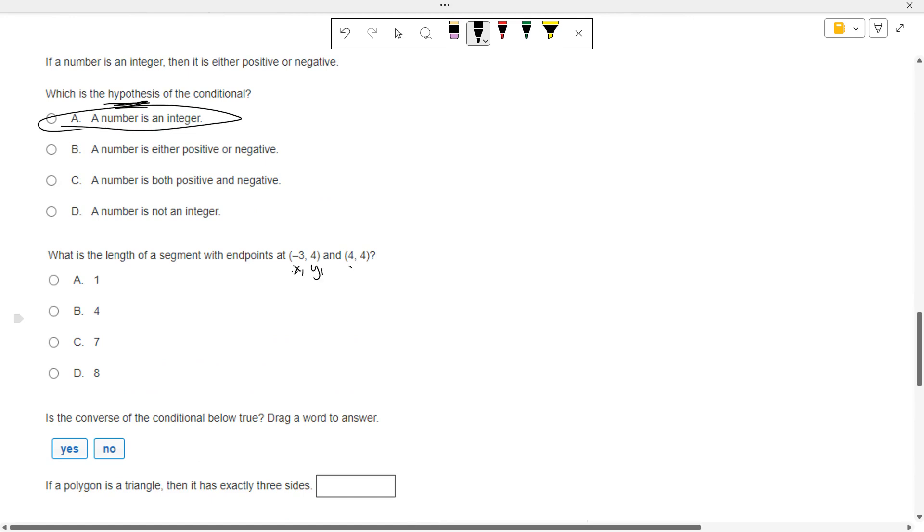What's the length of a segment with these endpoints? X1, Y1. X2, Y2. The square root of X2 minus X1 squared plus Y2 minus Y1 squared, which is 7 squared plus 0 squared, which is square root of 49, which is 7.